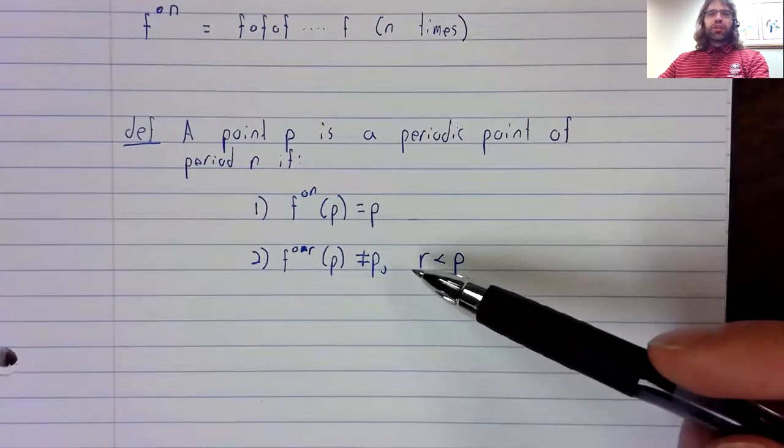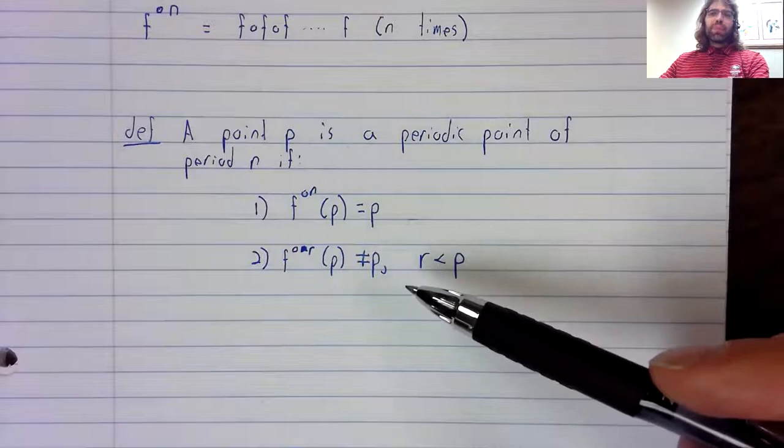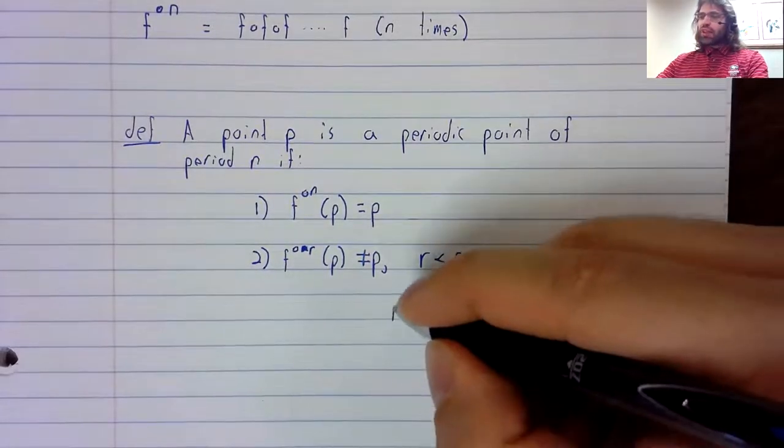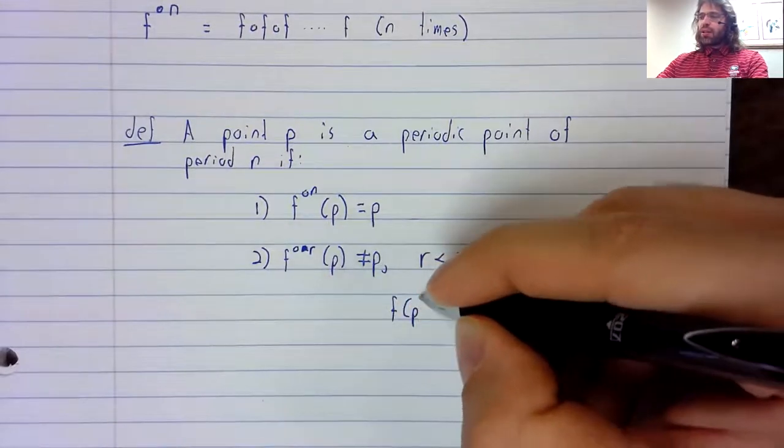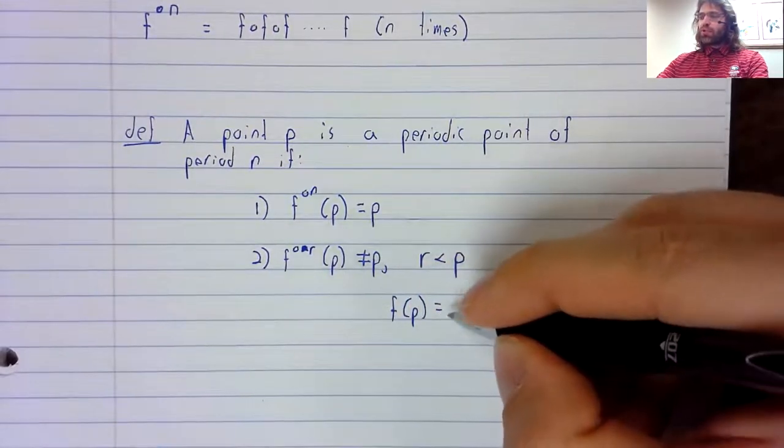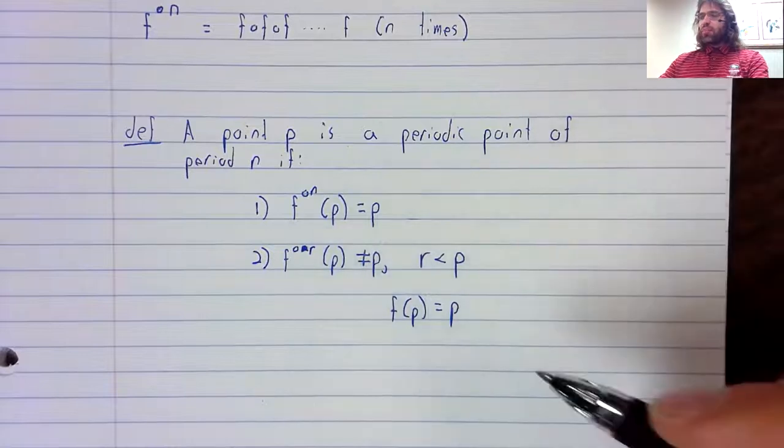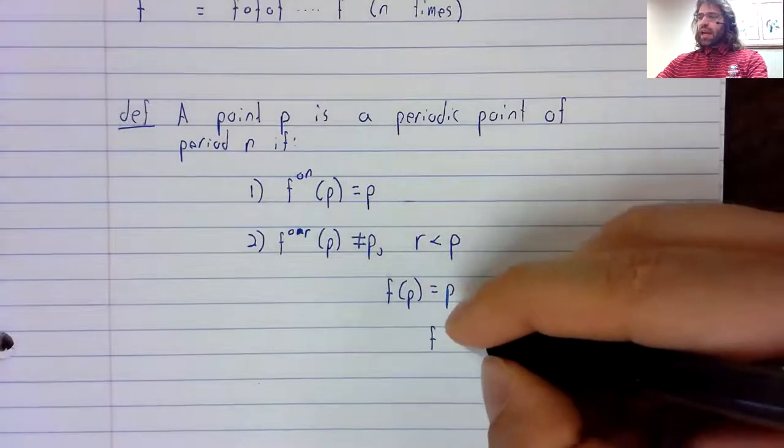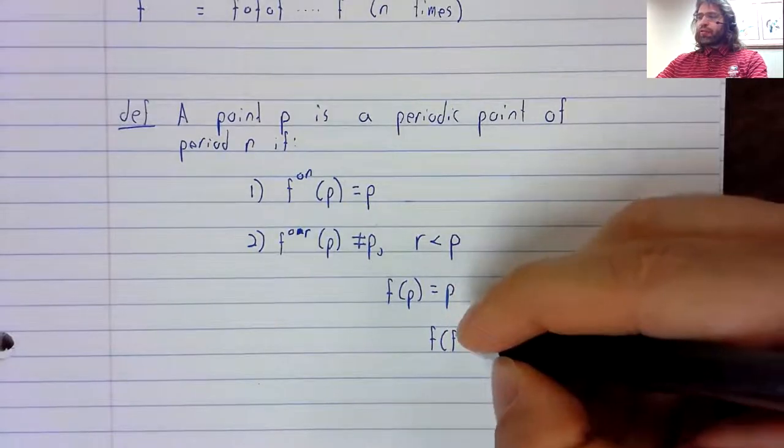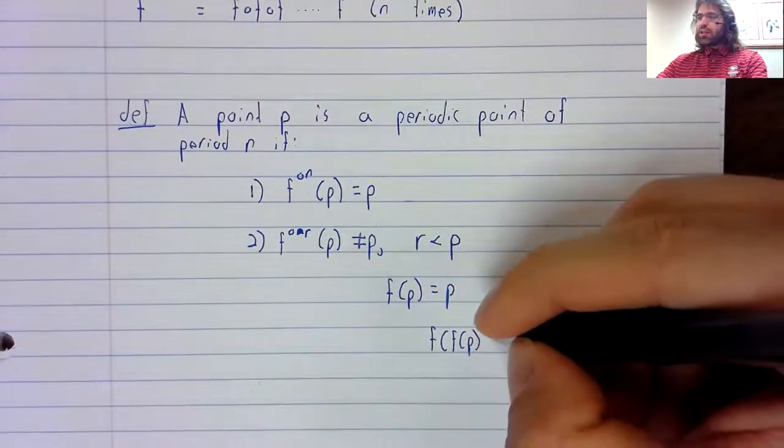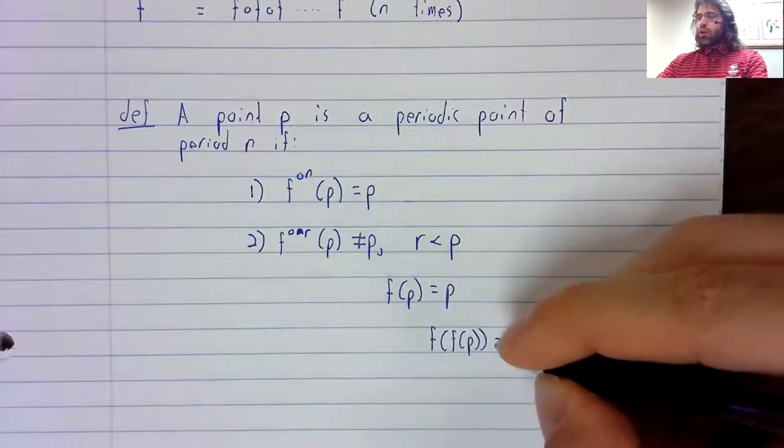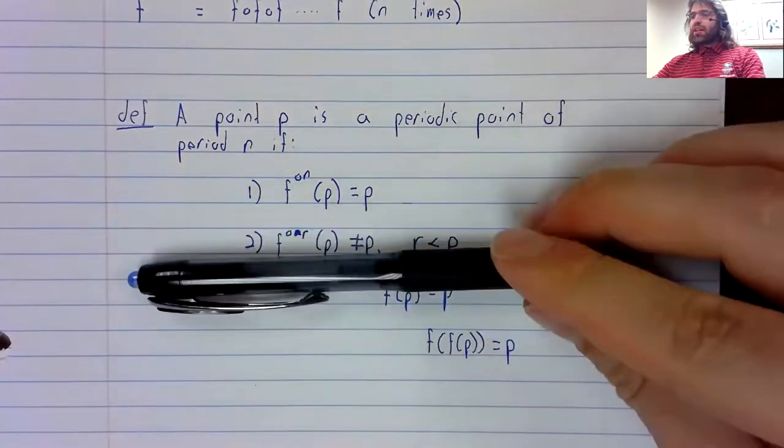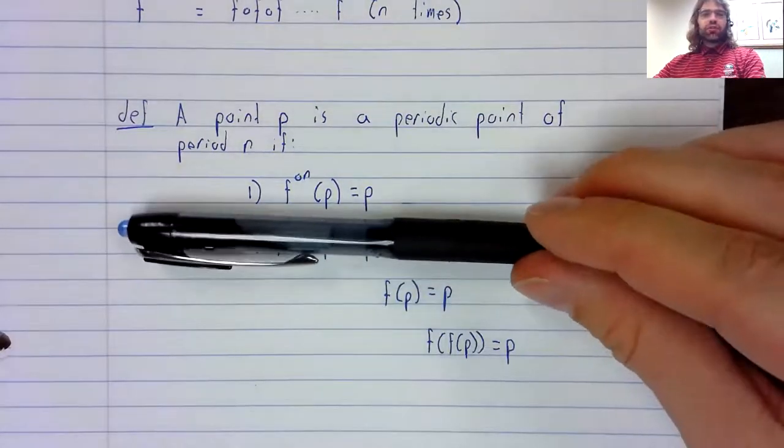And the second restriction is less cryptic than it might sound. Suppose that F of P equals P. So P is a fixed point. Well, then F of F of P is also P. So if we didn't have that second restriction,